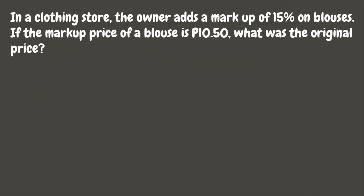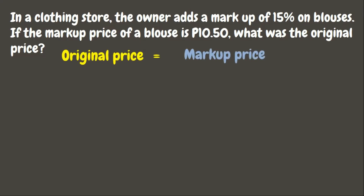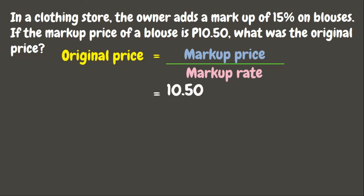Now let's look at this example. In a clothing store, the owner adds a markup of 15% on blouses. If the markup price of a blouse is 10 pesos and 50 centavos, what was the original price? This is an example of a markup problem. To solve for the original price in a markup problem, we simply need to divide the markup price by the markup rate. Here the markup price is 10.50 while the markup rate is 15%.